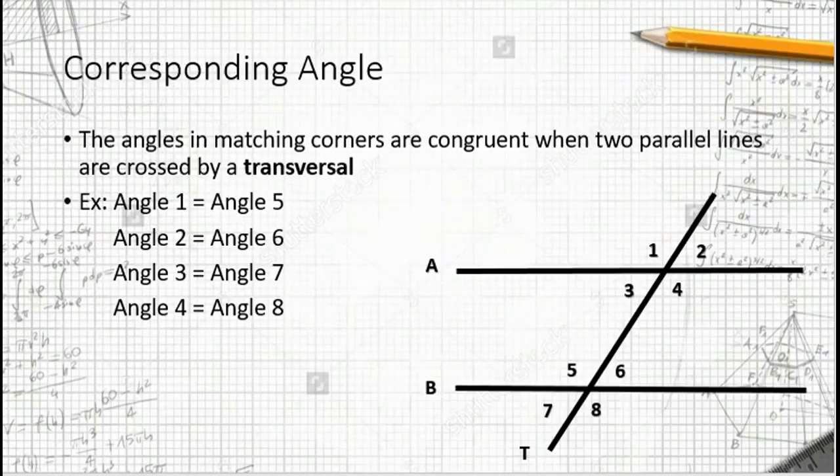In this case, we have line A and B, and they are parallel to each other. We also have a transversal T that crosses A and B.